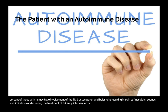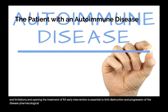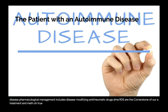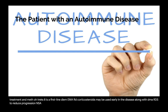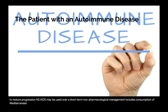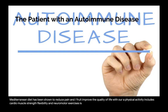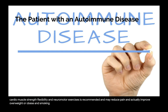Early intervention is essential to limit destruction and progression of RA. Pharmacological management includes disease-modifying antirheumatic drugs (DMARDs), the cornerstone of RA treatment; methotrexate is the first-line DMARD. Corticosteroids may be used early alongside DMARDs, and NSAIDs may be used short-term. Non-pharmacological management includes a Mediterranean diet, which has been shown to reduce pain and improve quality of life. Physical activity including cardio, muscle strength, flexibility, and neuromotor exercises is recommended, along with weight loss and smoking cessation.